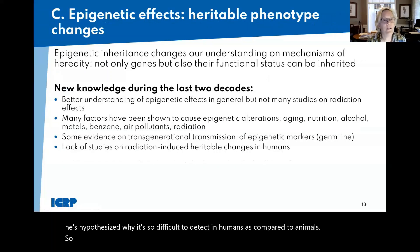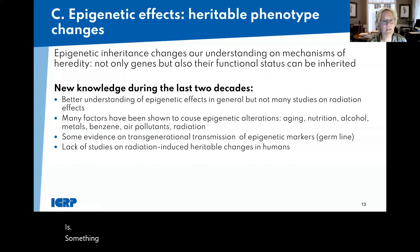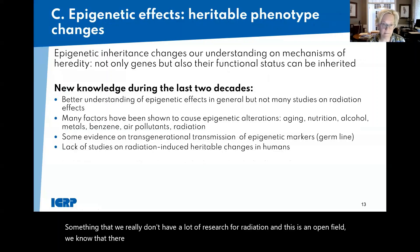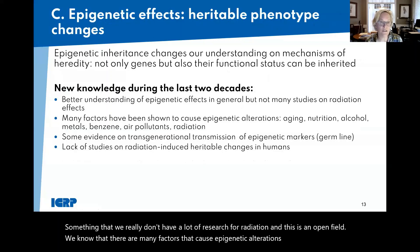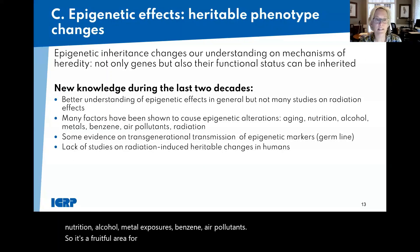New knowledge about epigenetic inheritance is something we really don't have a lot of research on for radiation — this is an open field. We know that many factors cause epigenetic alterations, including aging, nutrition, alcohol, metal exposures, benzene, and air pollutants. So it's a fruitful area for more research.